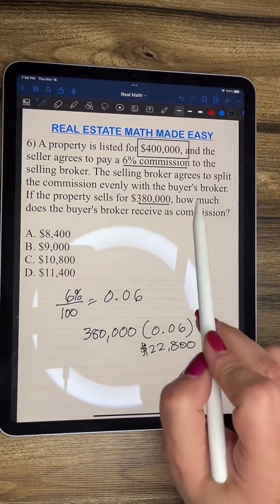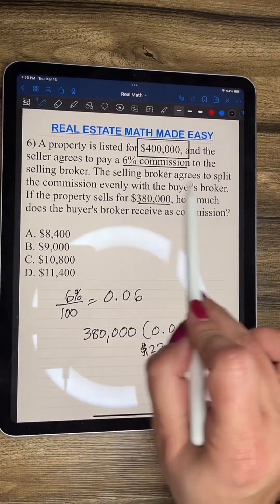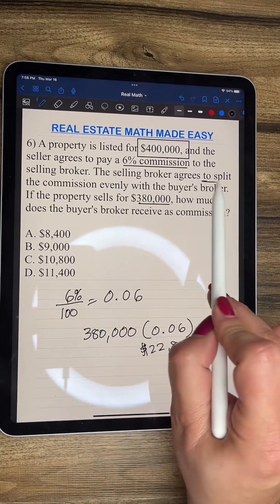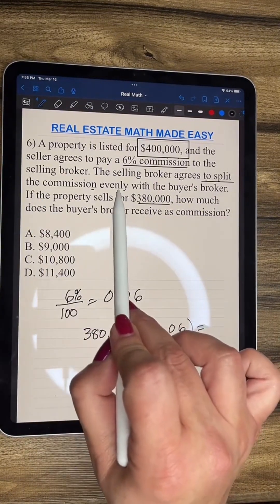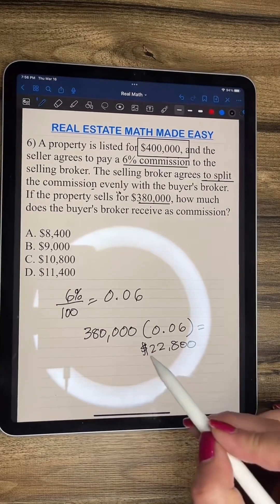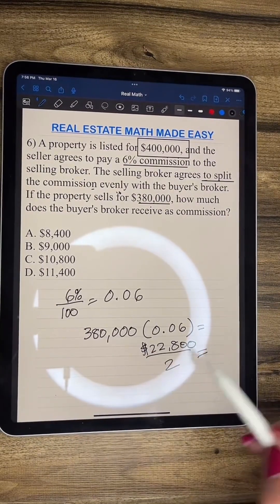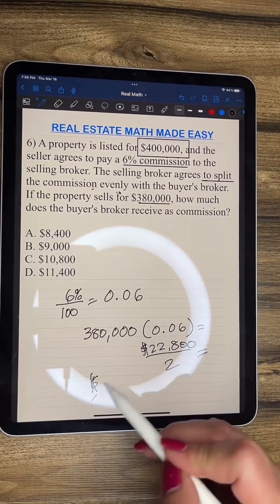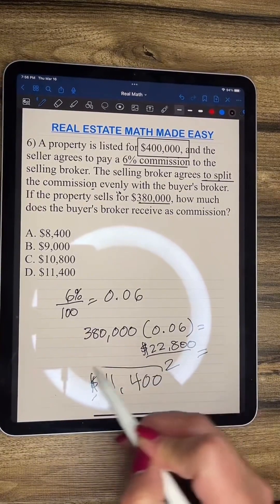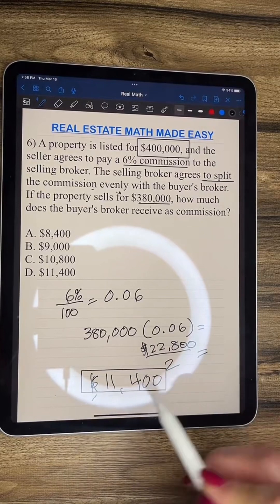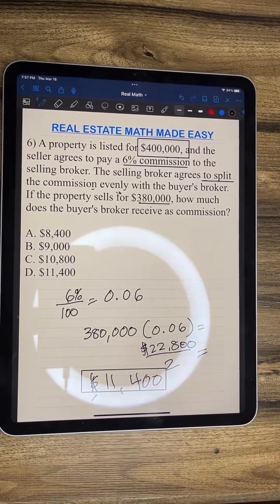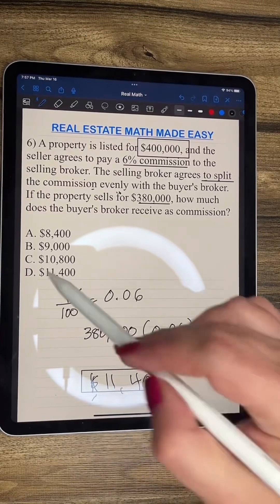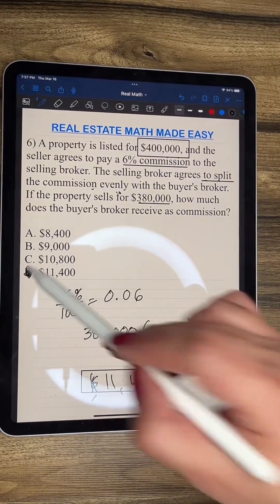But here it says that the selling broker agrees to split the commission evenly. We're going to divide. We got to divide by two. So we divide this by two. And this is going to equal $11,400. So one broker gets $11,400, and the other broker gets $11,400. So our answer for this one is D.